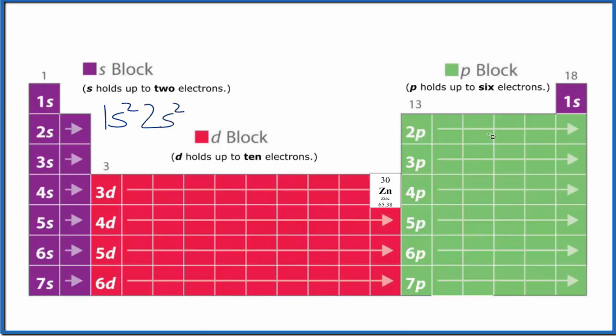Then over to 2p: 1, 2, 3, 4, 5, 6. P can hold up to 6, so 2p6. Third energy level: 3s2, 3p6. We're at the fourth energy level: 4s2, and then we have 3d.